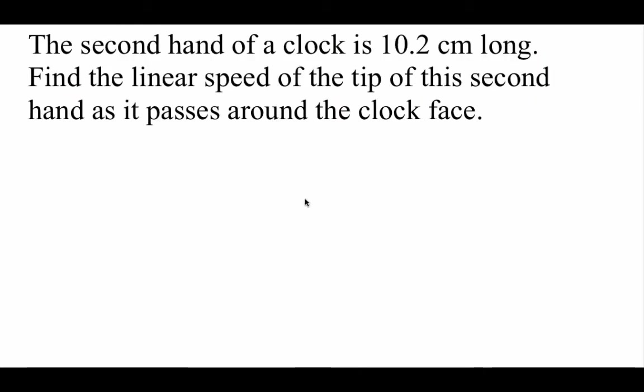In this example, we're taking a look at a clock and we're focusing on the second hand of a clock. We're told it's 10.2 centimeters long. We're going to find the linear speed of the very, very tip of the second hand as it passes all the way around the face of the clock. Now, in order to find the linear speed, we need to first find the arc length. So in order to do that, remember, we take R times theta. Well,